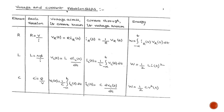Hello all, welcome back. In the previous videos we have seen about the passive elements: resistor, inductor, and capacitor. A resistor is the energy dissipating element, whereas inductor and capacitor are energy storing devices, so these two can act as virtual sources. Inductor stores energy in the form of magnetic field, whereas capacitor stores energy in the form of electrostatic field.